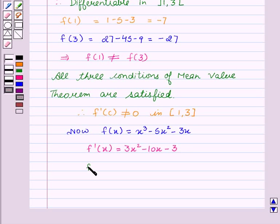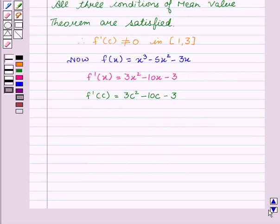Therefore, f'(c) will be equal to 3c² - 10c - 3. Given f'(c) = 0, therefore 3c² - 10c - 3 = 0.